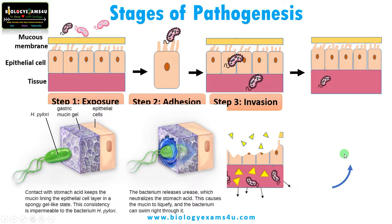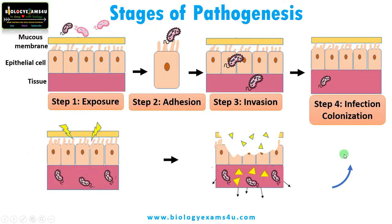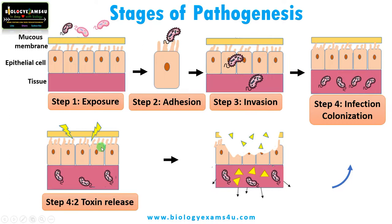Once invaded, the next step is causing infection. The first step in causing infection is colonization. Bacteria start replicating very quickly and the number of bacteria increases drastically within the tissue. Then it starts secreting toxins — endotoxins and exotoxins — and enzymes like shiga toxin by Shigella, tetanus toxin by Clostridium tetani, botulinum toxin by Clostridium botulinum — all are toxins that ultimately cause the destruction of cells and tissue damage.